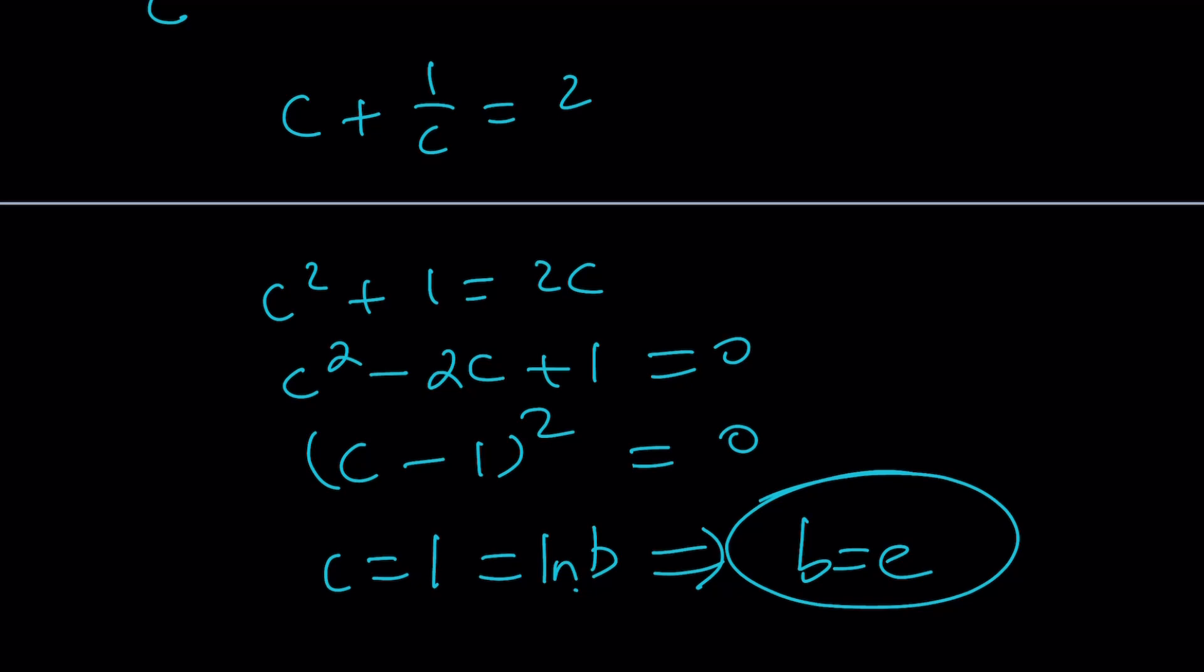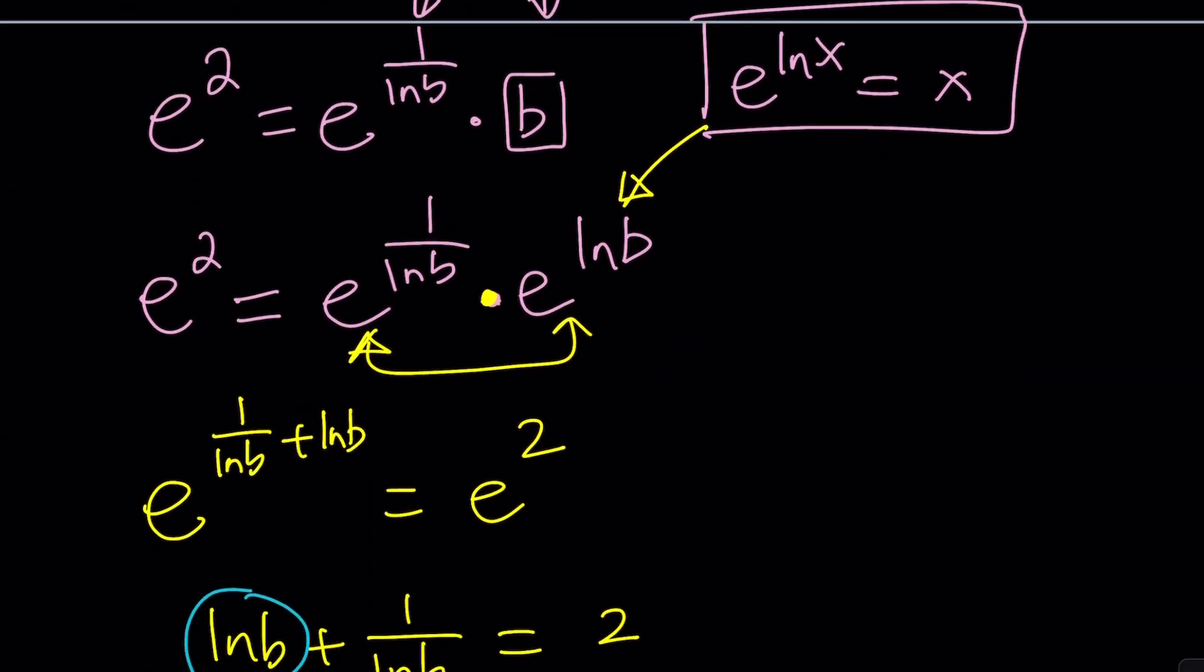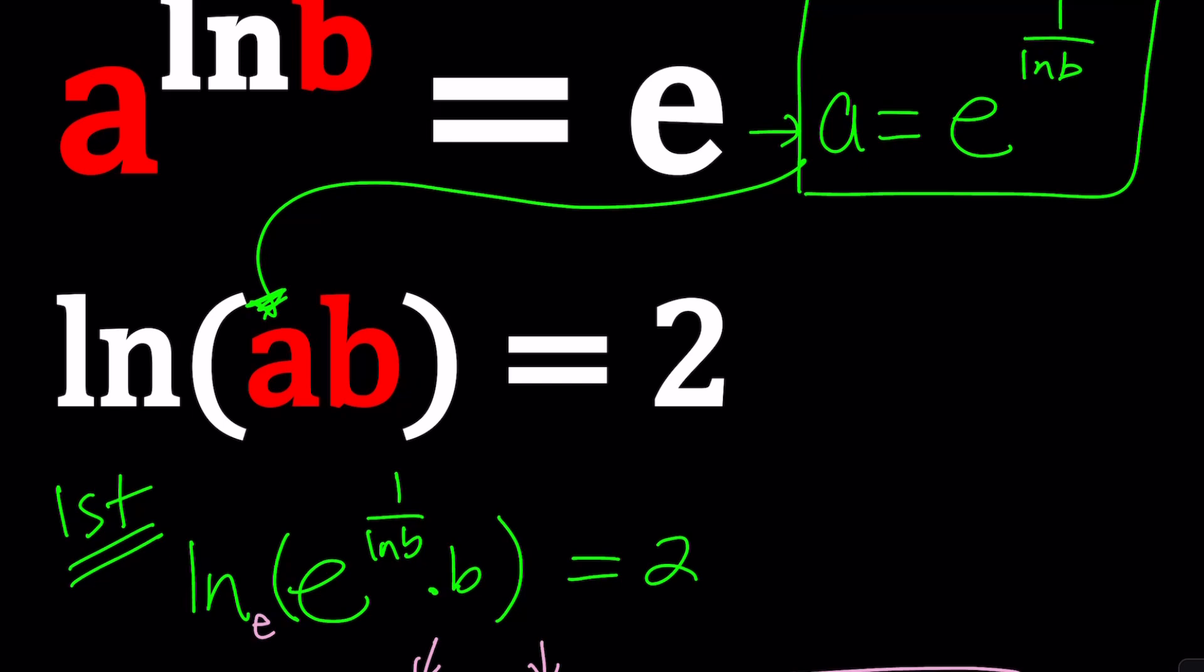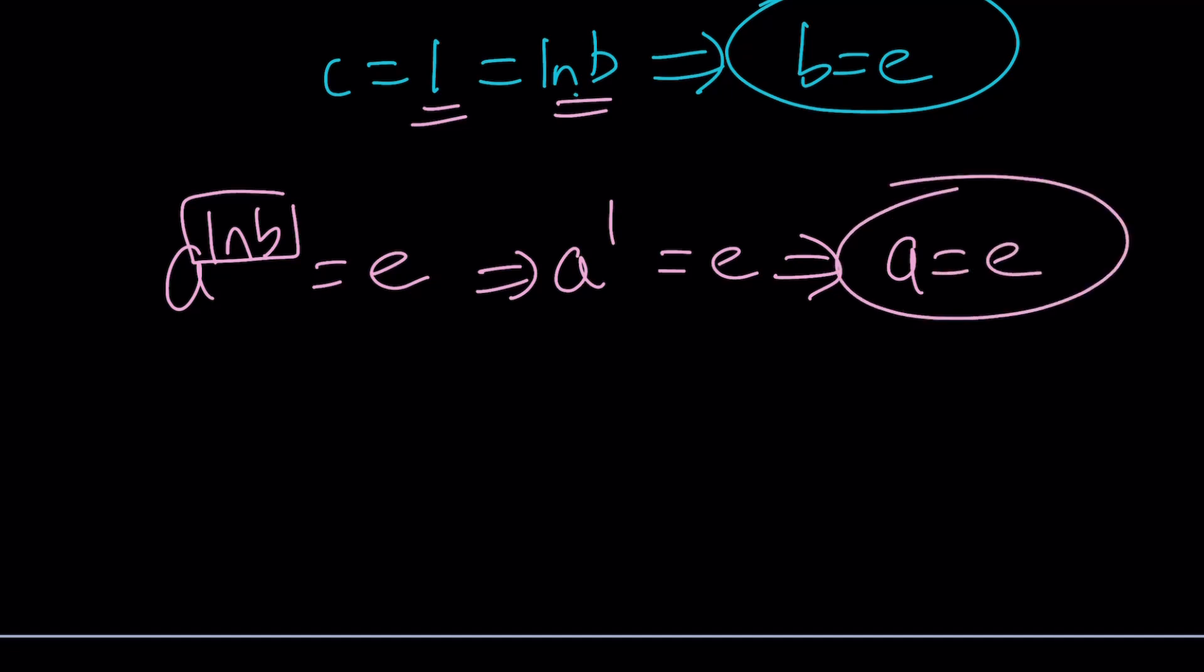Now we're going to solve for a, and then we have to do the other methods. So if b is equal to e, let's see how we can use it. Probably I'll use the first equation, the top one. So I know that a to the ln b is equal to e, and b is equal to e, which means ln b is equal to 1. We already know that. So from here, we're going to get a to the power ln b, which is 1, equals e, which implies that a equals e as well. So a and b are both e, which is interesting because they're equal, and you cannot tell that right away sometimes. But that's what ends up happening.